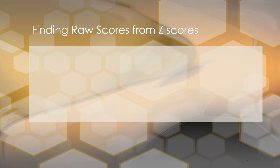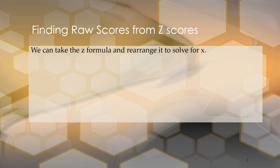Now we're going to talk about finding raw scores from z-scores. We're going to take the z-formula and rearrange it to solve for x, so instead of going from x to z, we're going from z to x. Here's our z-formula, and now we're going to solve for x.